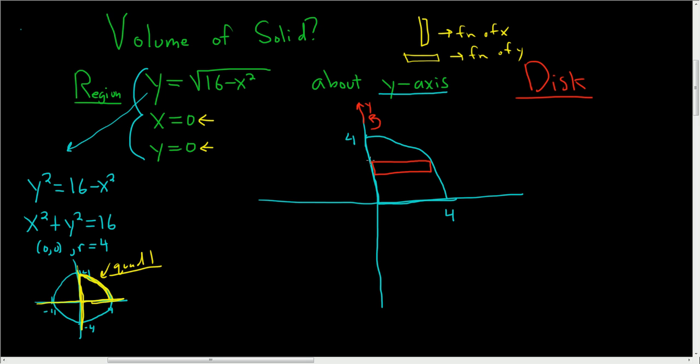So this distance here, the distance from this far end of the rectangle all the way to the axis of revolution is big R of y. So because we have functions of y, we actually have to solve this for x. So we've already started to do that over here.